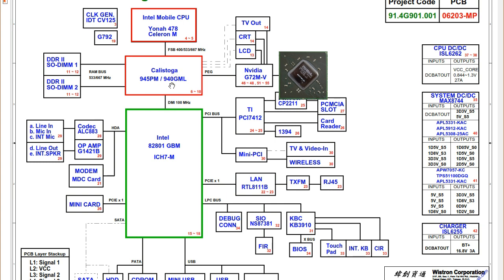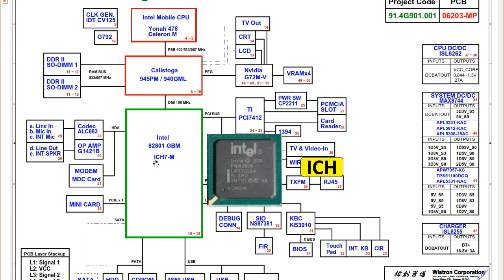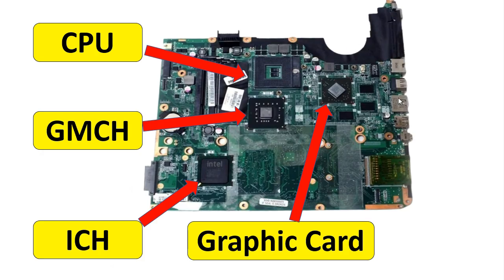The North Bridge is connected directly to the ICH, or Input/Output Control Hub, via DMI — Direct Media Interface — at a frequency of 100 MHz. This motherboard is an old motherboard where the chipset is separated.